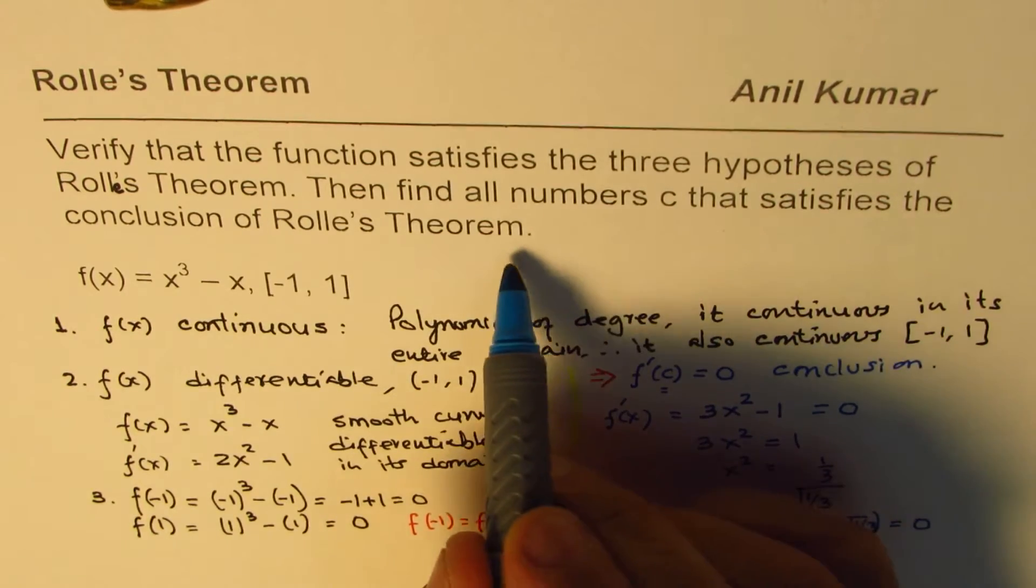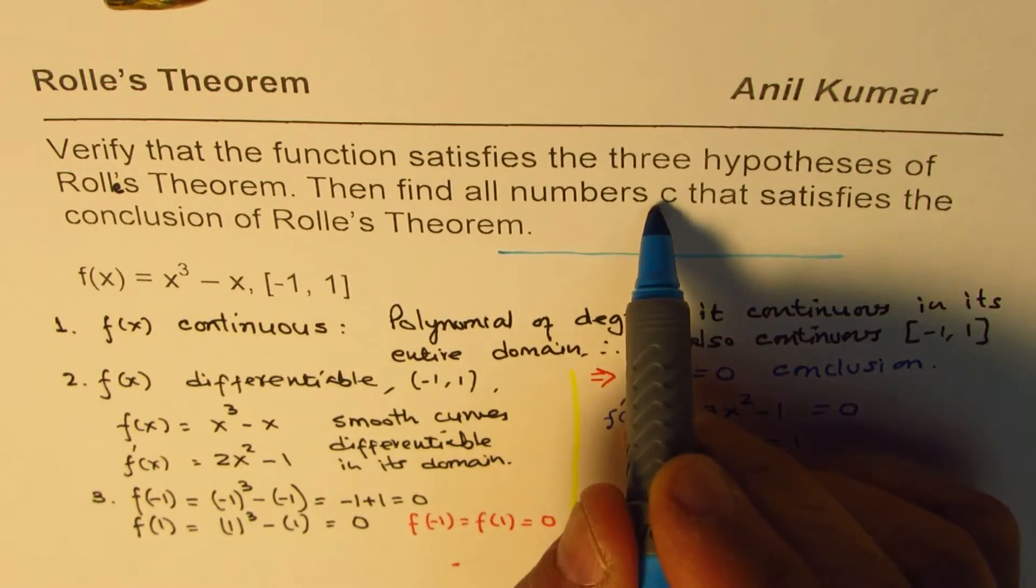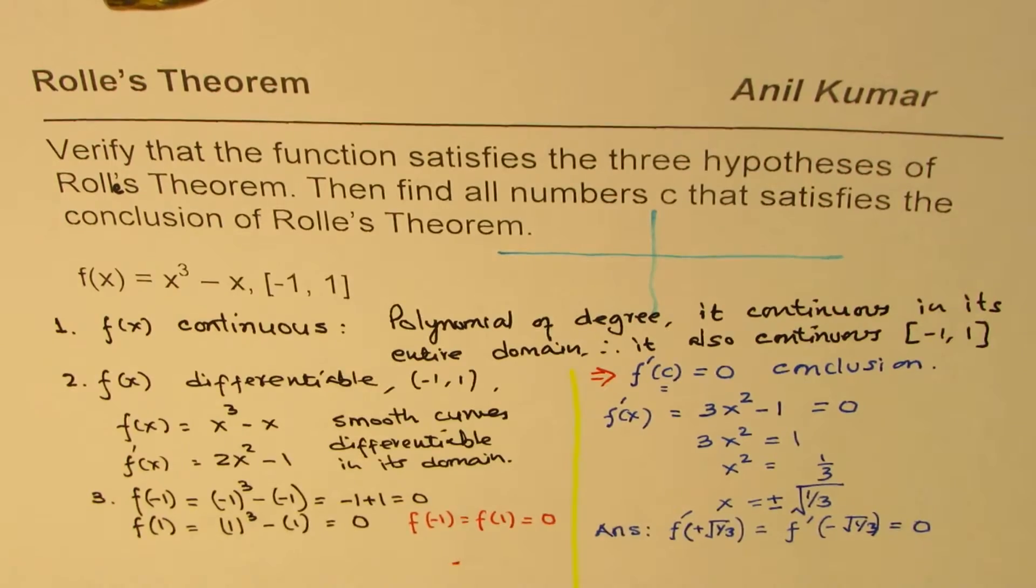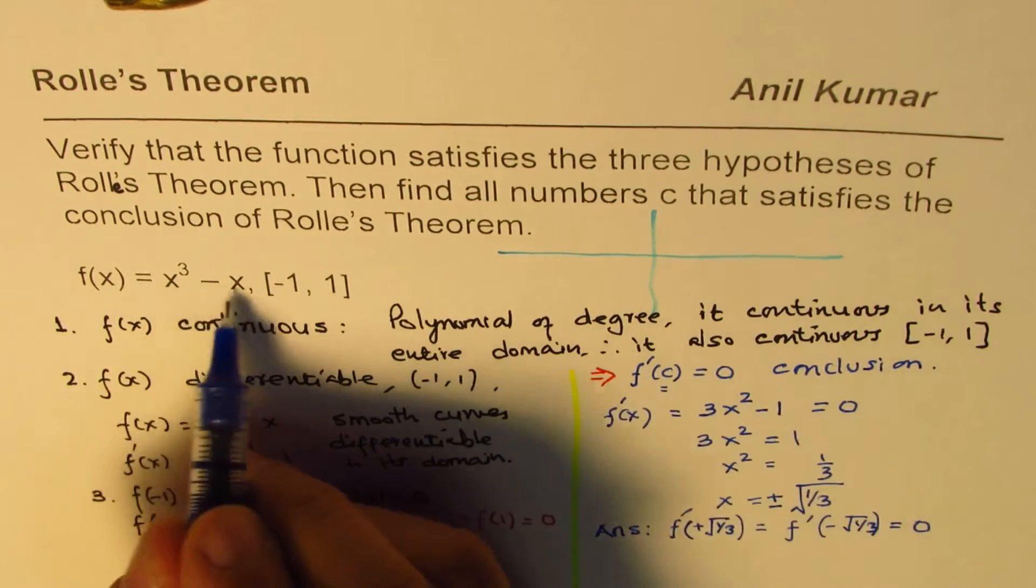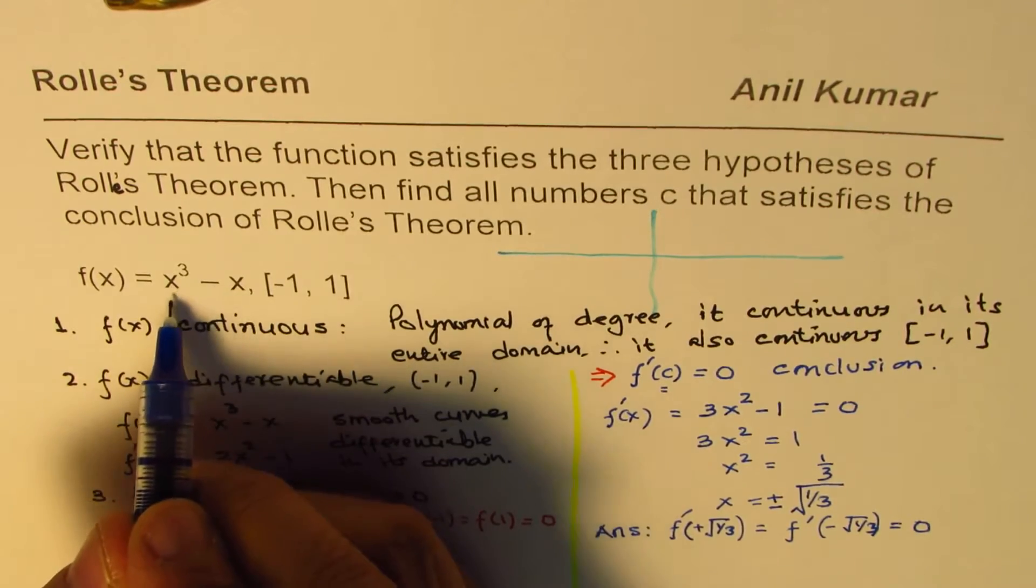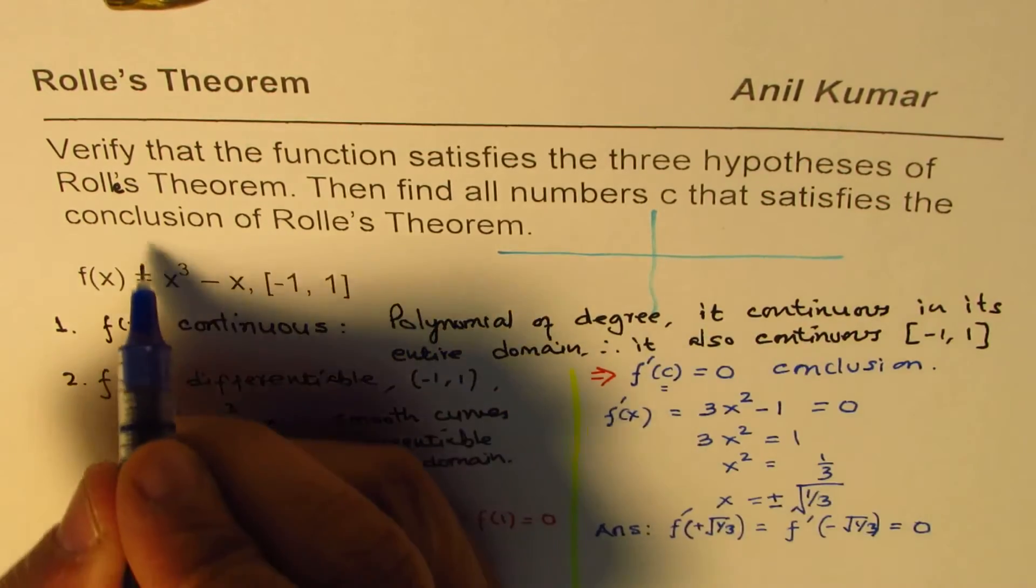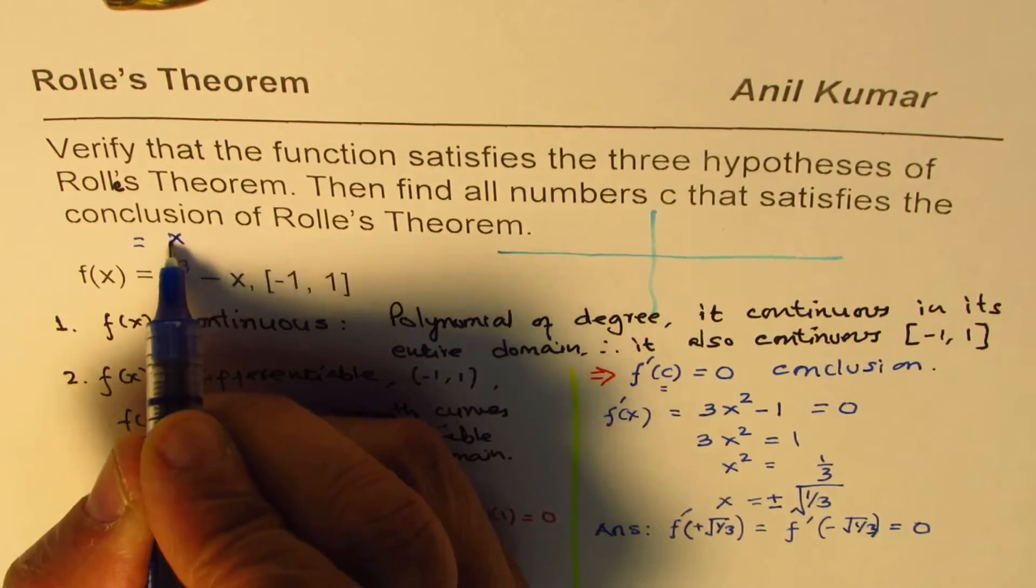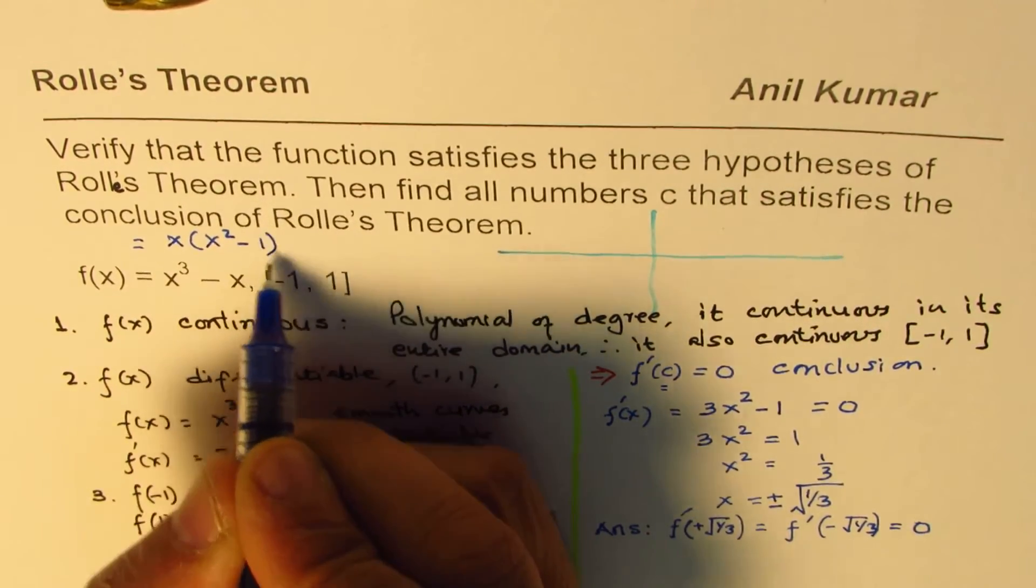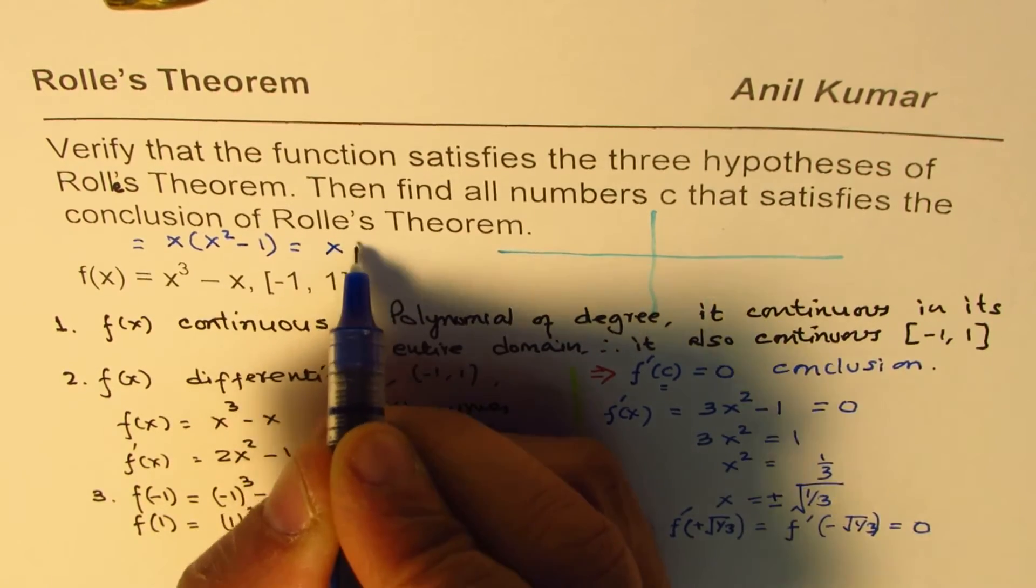So I'll make a small sketch here just to demonstrate. To sketch it we can factor this equation. So what we get here is if I take x common, we get x(x² - 1) which could be factored further and written as x(x + 1)(x - 1).